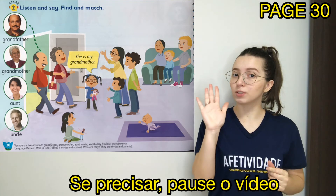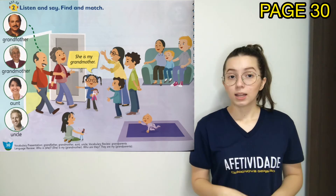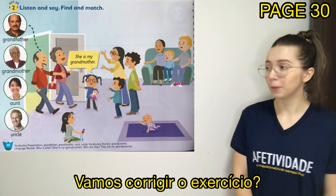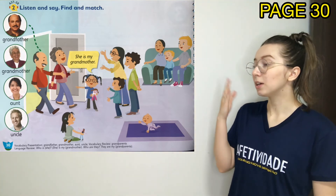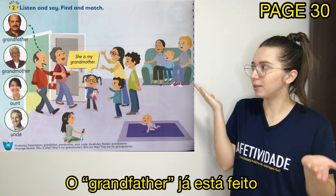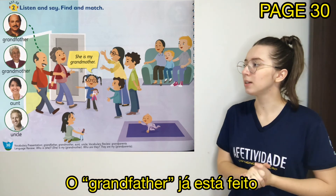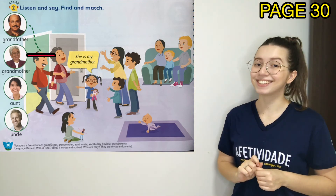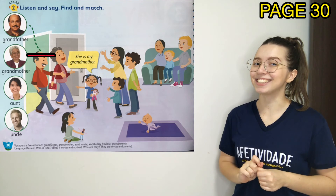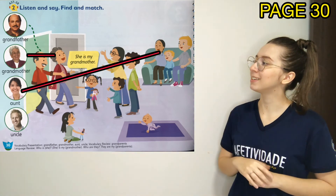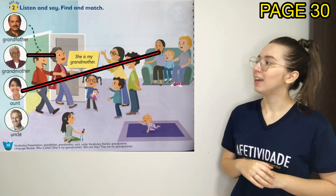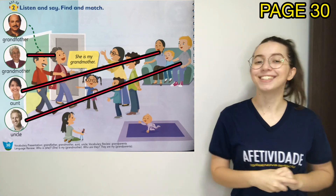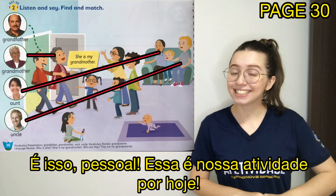If you need, pause the video. Let's correct the exercise. Let's see. Grandfather — it's already made. Grandmother. Oh, that's nice! Aunt. And Uncle. That's it, guys!